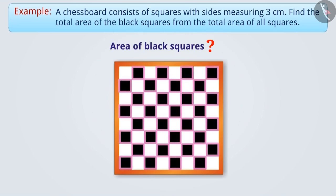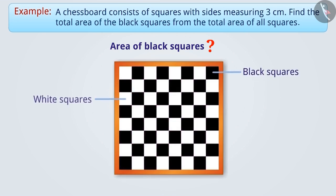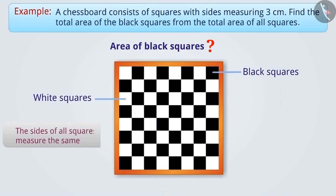A chessboard is made of black and white squares. The sides of all squares measure the same. We can solve this question in different ways.